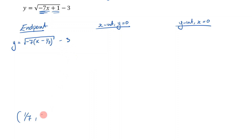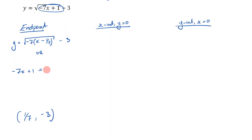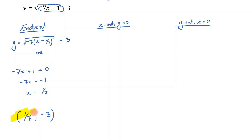The y-value of the endpoint is just your vertical translation, which is negative 3. There's actually another way to find the endpoint — and I actually prefer this method. Just take whatever is underneath the square root sign, in this case negative 7x plus 1, set it equal to 0, and solve for x. Minus 1 from both sides, then divide both sides by negative 7: negative 1 divided by negative 7 gives positive 1/7. Same answer. Either method works — just make sure you do it accurately.